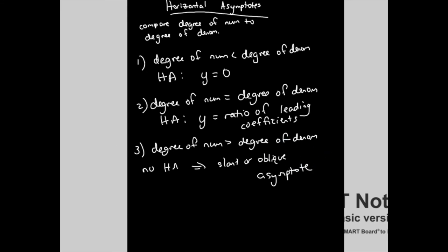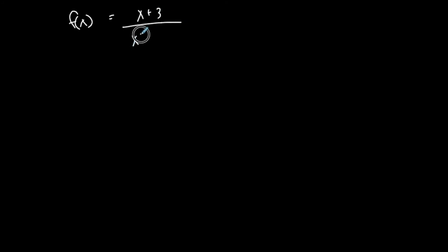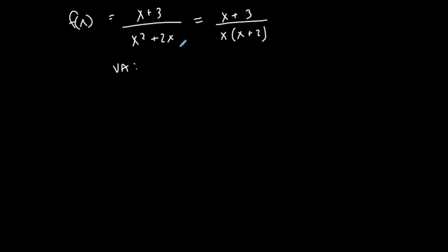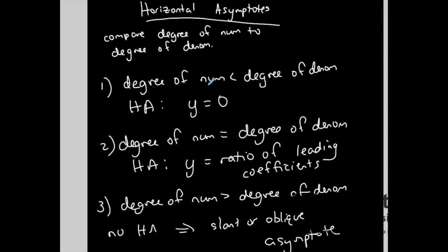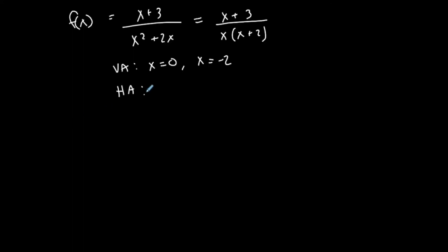Let's do an example — I'm just going to find horizontal asymptotes for these cases. Here is a rational function. It does not have a removable discontinuity; there's no hole. It's going to have two vertical asymptotes, one at x equals 0 and the other at x equals negative 2. And it does have a horizontal asymptote because the degree of the numerator is less than the degree of the denominator — that's Case 1. So y equals 0 represents our horizontal asymptote.